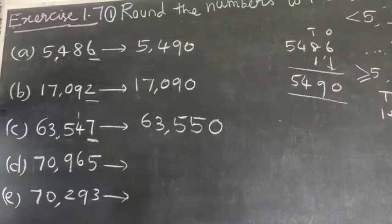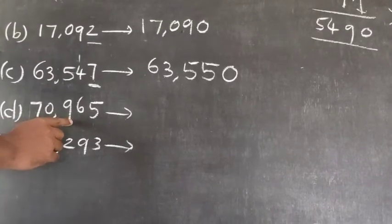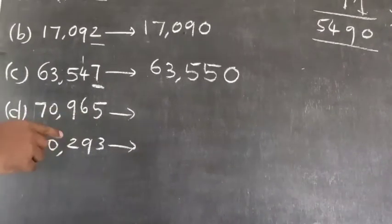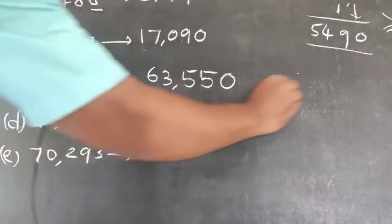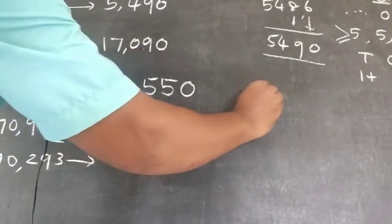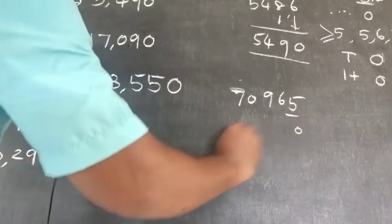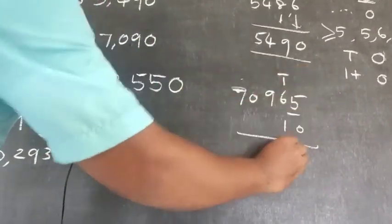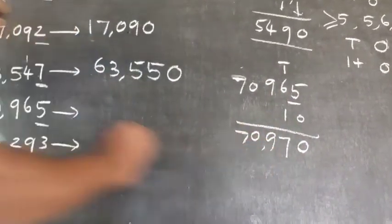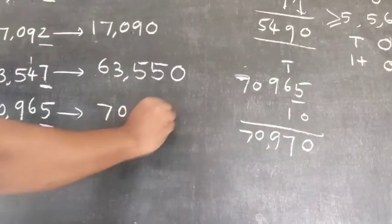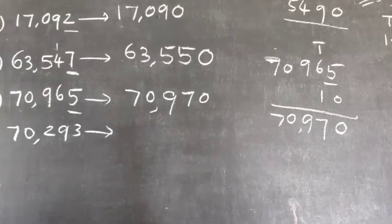Question D: 70,965. The last digit is five, so it becomes zero and we add one to the tens place. 6 plus 1 equals 7, giving us 70,970 as the answer.